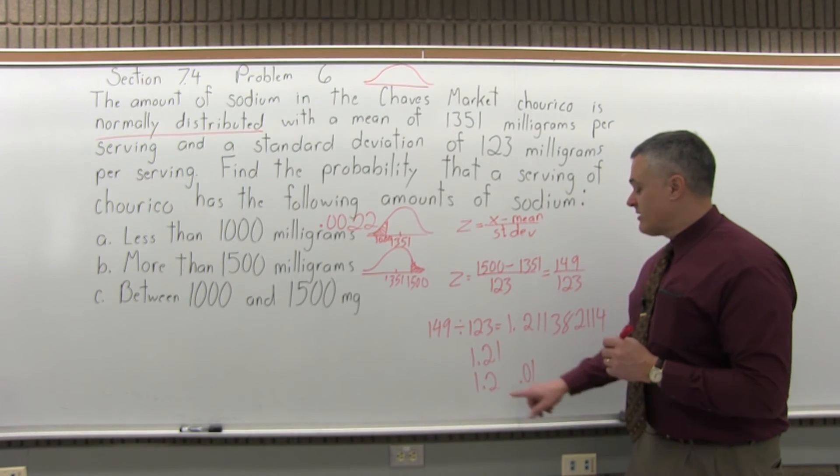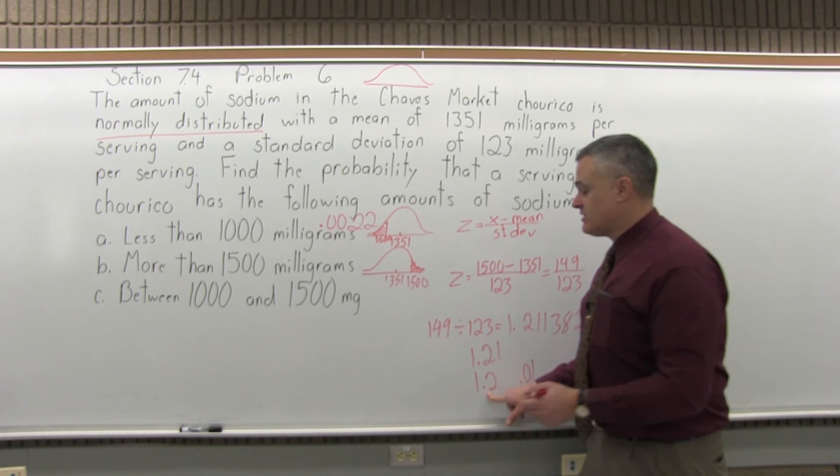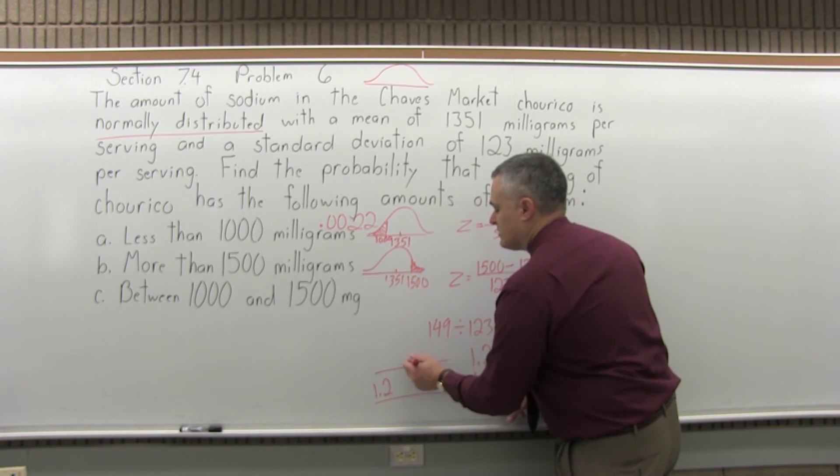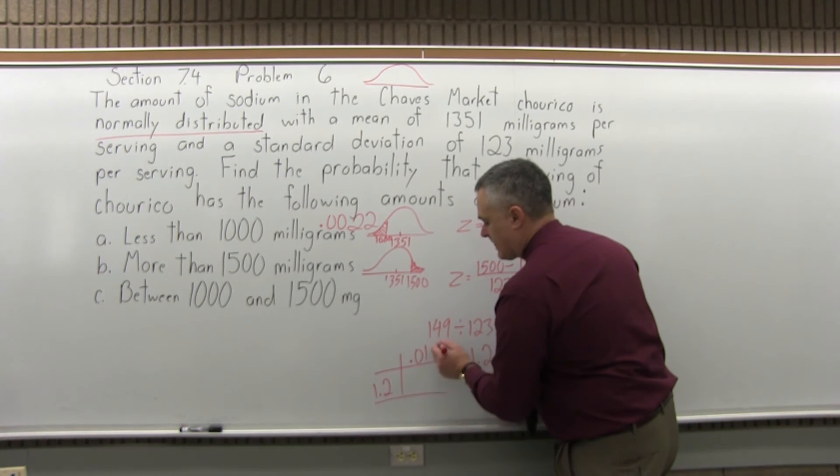Now we can go to the chart. This time we want the positive portion of the chart, so we will go to the 1.2 row, see where that intersects with the .01 column, and that will intersect at .8869.